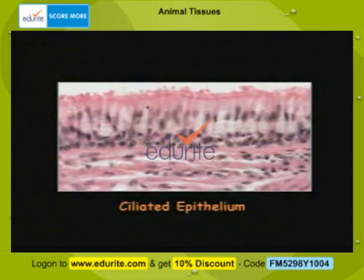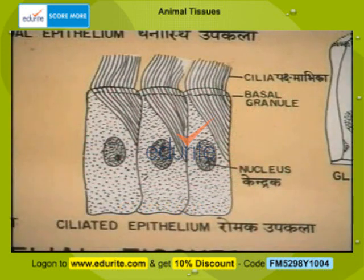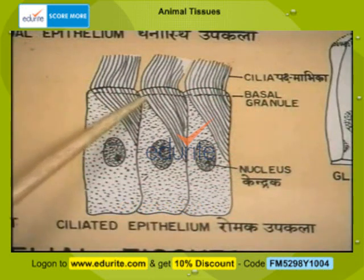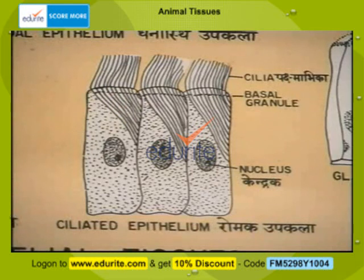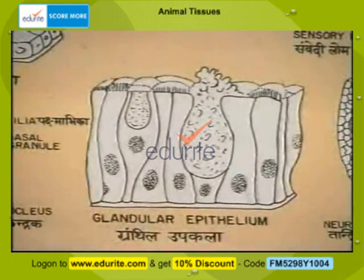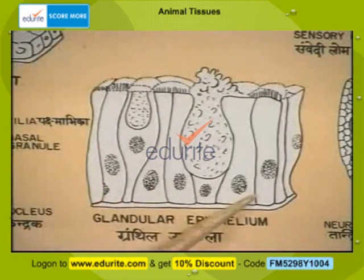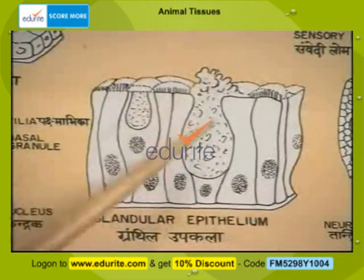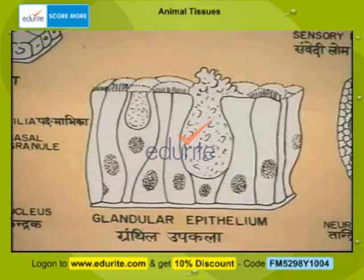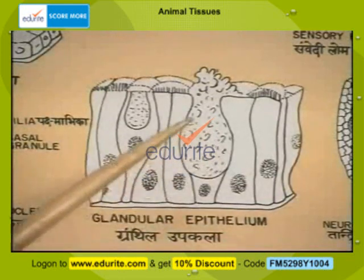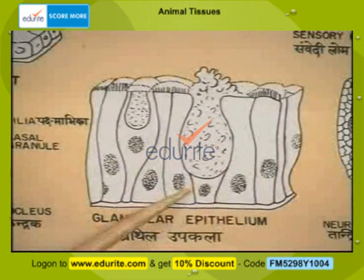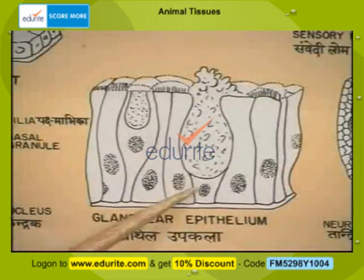Ciliated epithelium is a set of epithelial cells with fine projections called the cilia. These are found in the respiratory tract, the trachea, and in the oviduct. Glandular epithelium is a set of epithelial tissues that are capable of secreting mucus as well as some enzymes. They are found in glands like the sweat glands, the tear glands, etc.